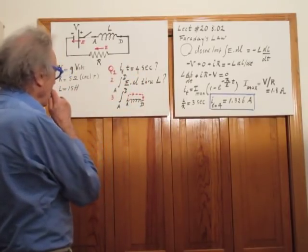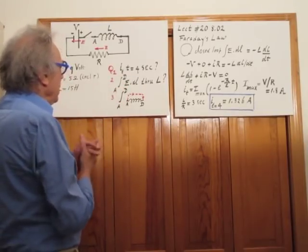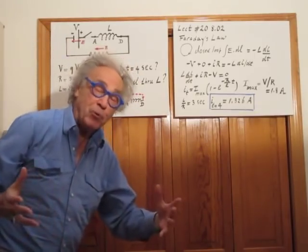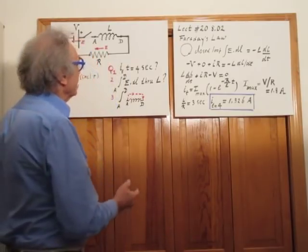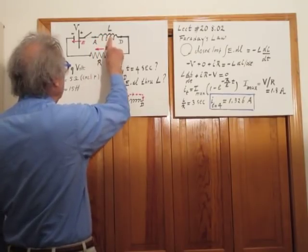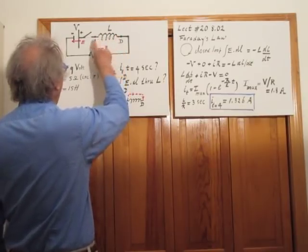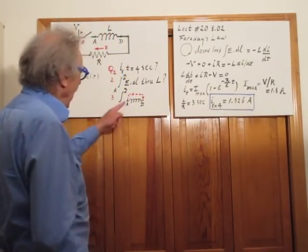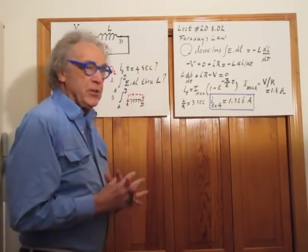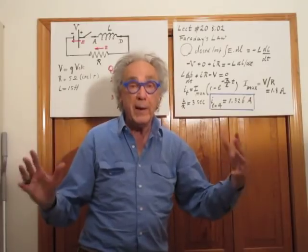The second question is: if I measure the integral of E dot dl — which people often refer to as potential difference — calculate that when you go from A to D through the wire, and calculate it when you go from A to D outside the wire. I indicated that with this circuit. In lecture 20 of 802, I discuss all of this in great detail.